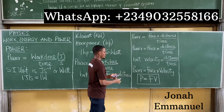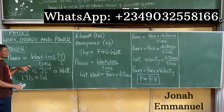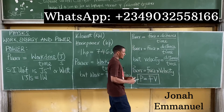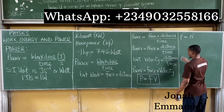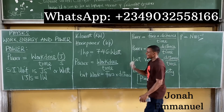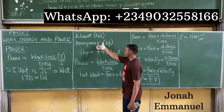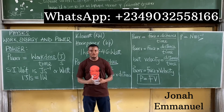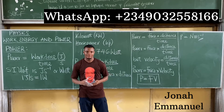So power has two mathematical expressions: either the ratio of work done to time taken, or the product of force and velocity. Using these SI units, power can also be expressed in newton·meters per second. In summary, the units of power are: joules per second, watts, kilowatts, horsepower, or newton·meters per second.